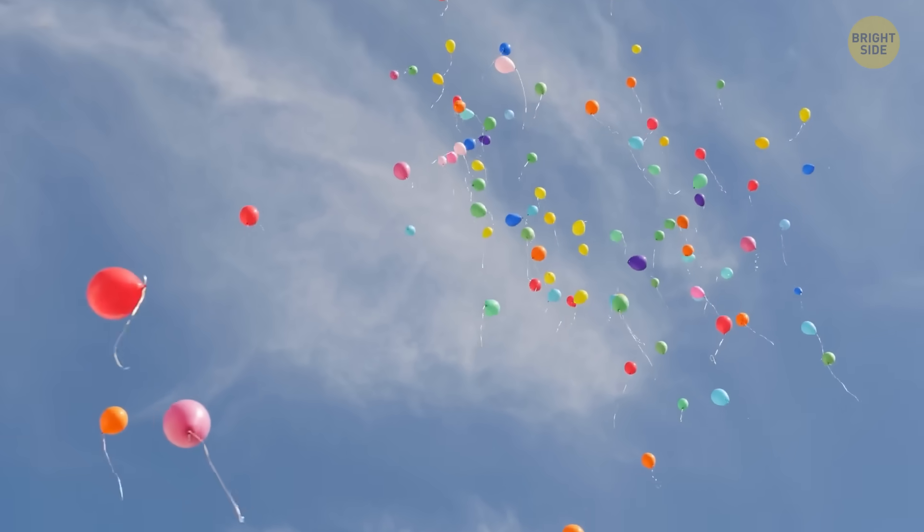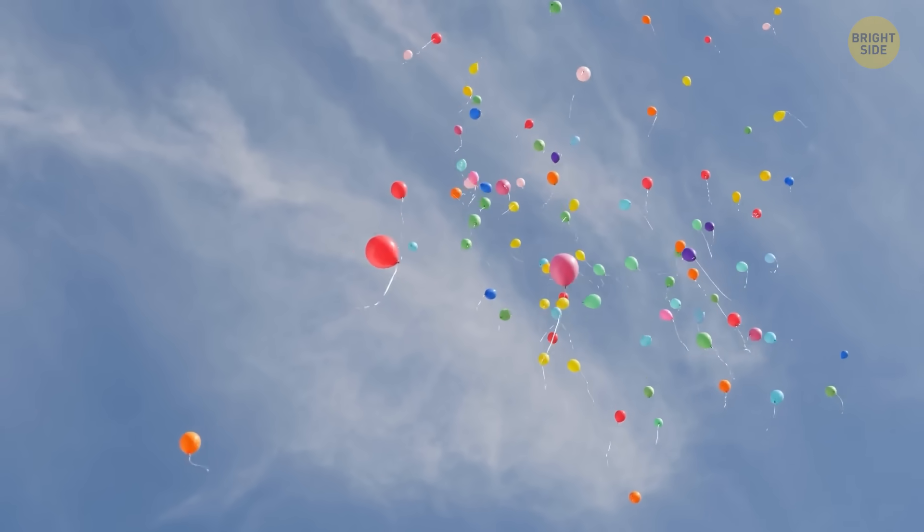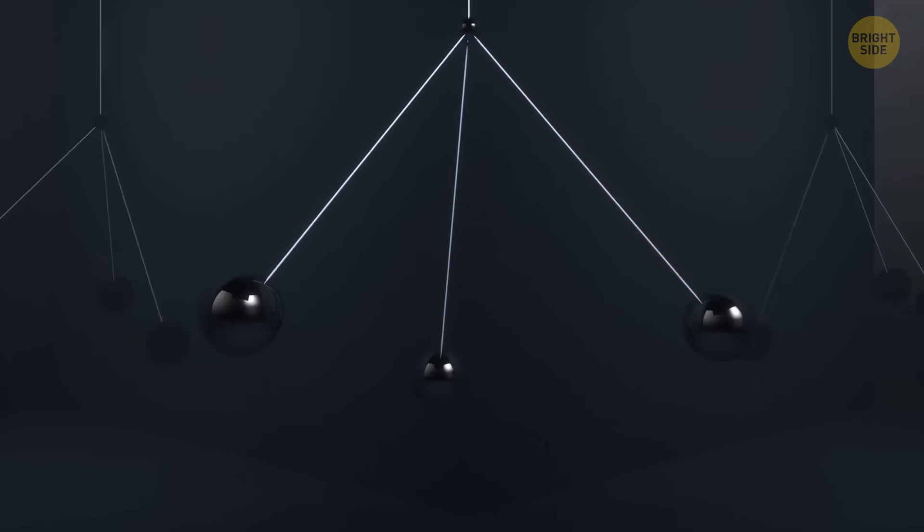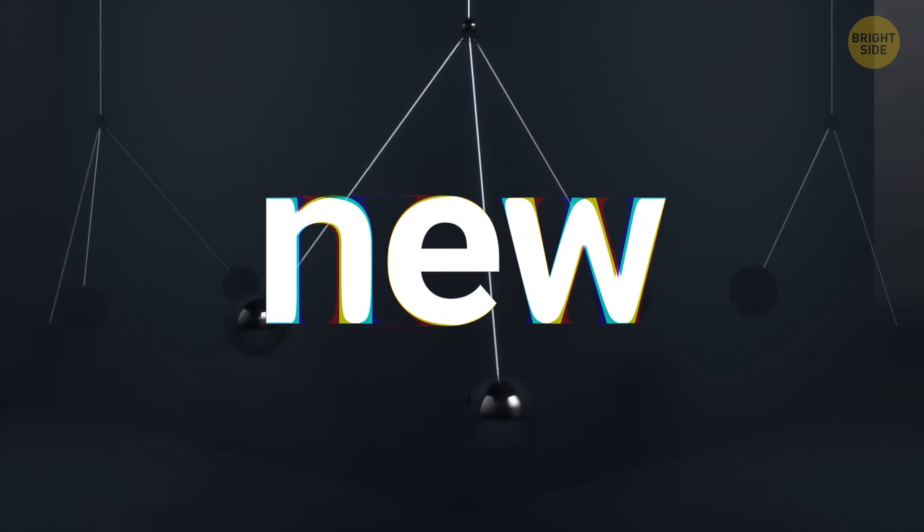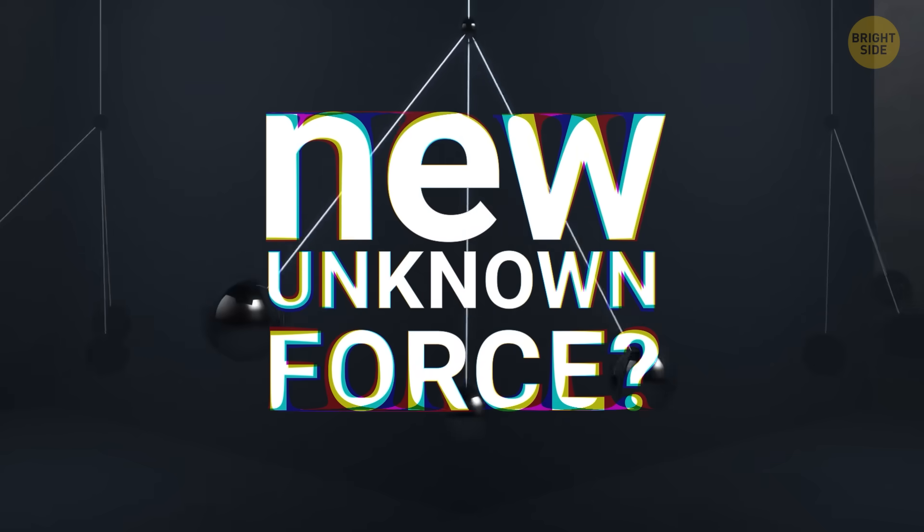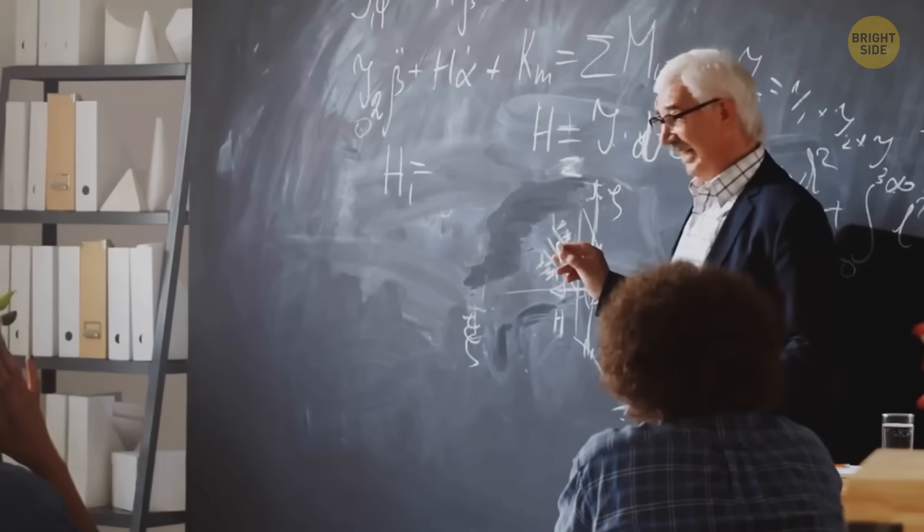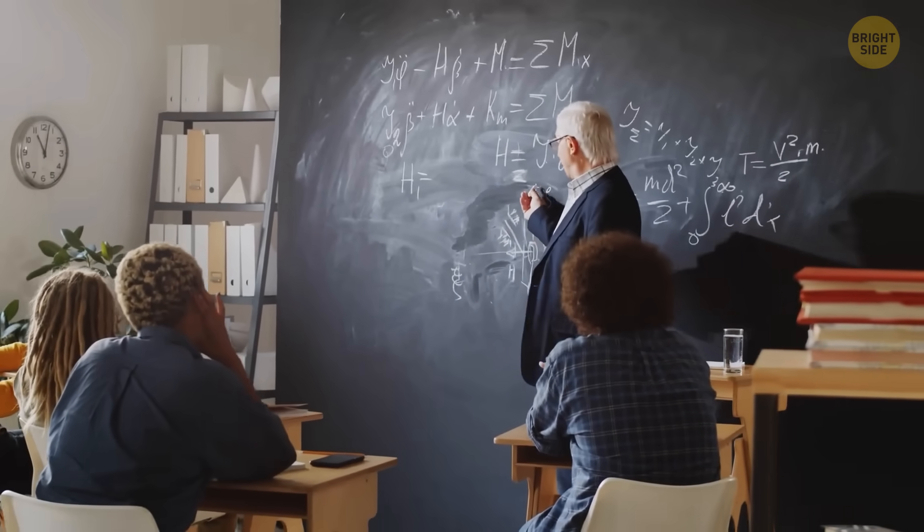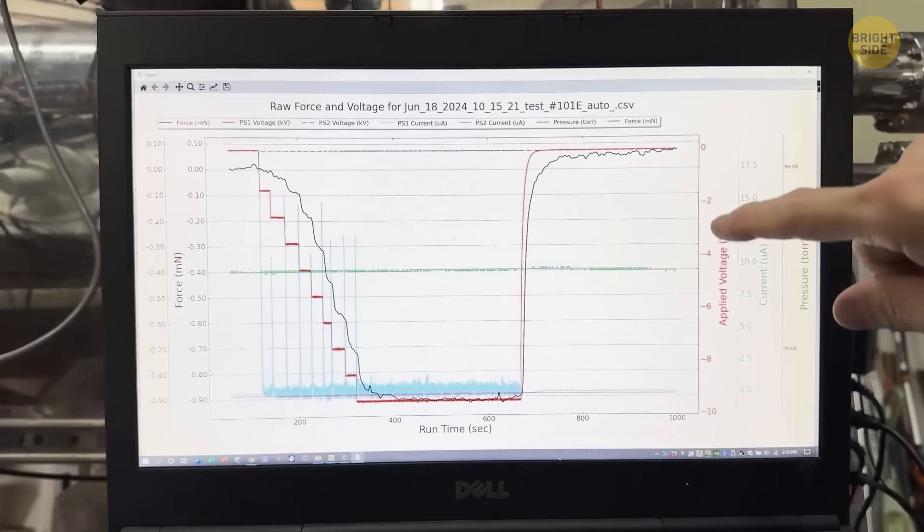It's like a balloon that can somehow move forward without blowing out any air. If the machine actually works, there must be some new, unknown force of nature that we've somehow missed in hundreds of years of physics. Buehler himself called it the new force.